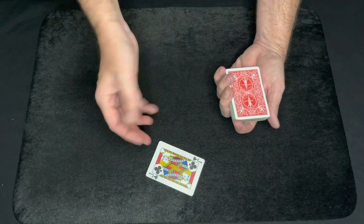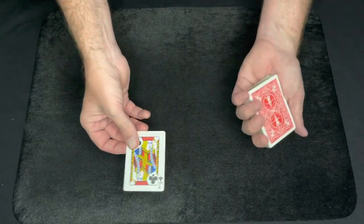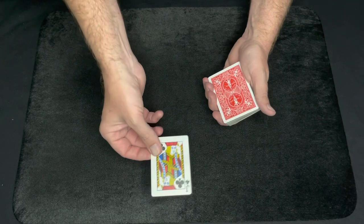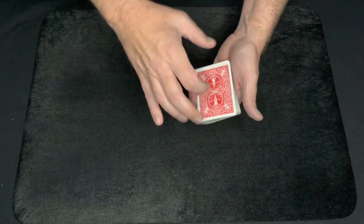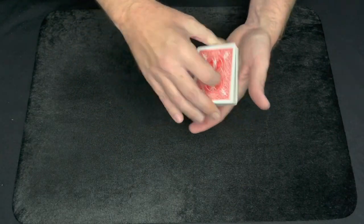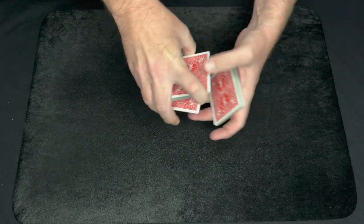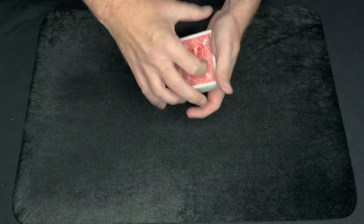They'll look at it, remember it, don't show you, but for the tutorial, obviously I'm going to see it. Don't show you, you take their card and just lose it somewhere in the middle of the deck of cards. Just give the deck a few random cuts, just like that.